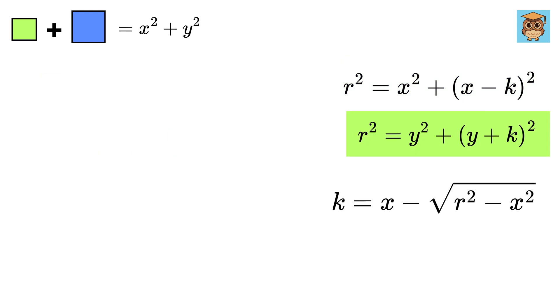Now consider this equation. Take y squared here and then take square root on both sides. Now take y on this side and we are left with K equals square root of R squared minus y squared minus y.